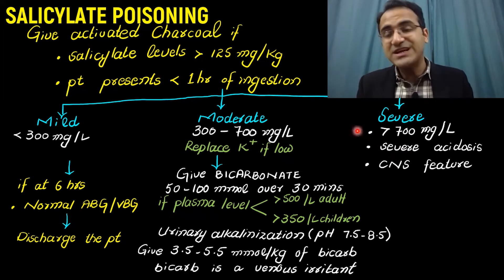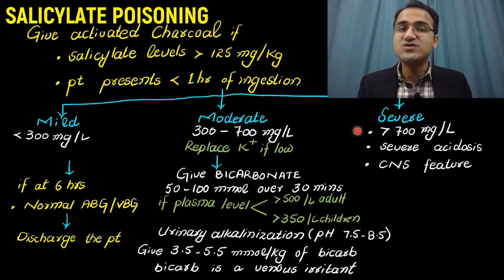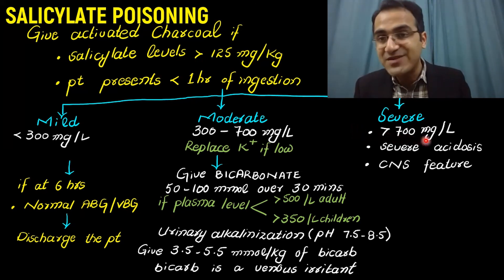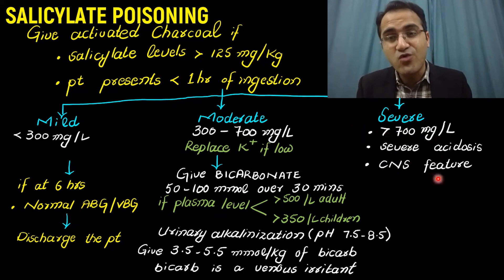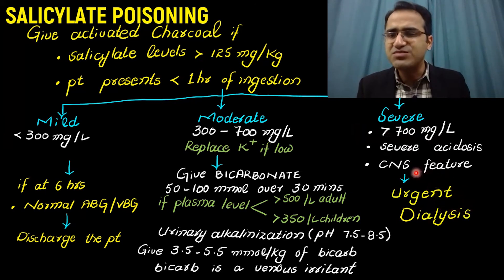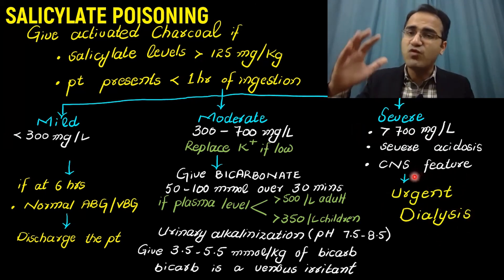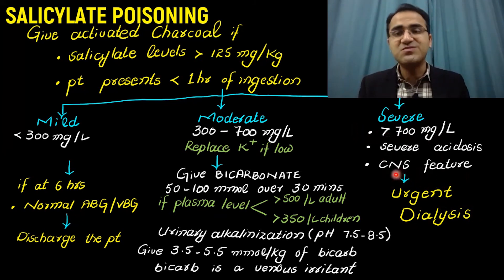In severe cases of salicylate poisoning — defined as salicylate level greater than 700 mg per litre, or severe acidosis, or CNS failure such as coma and confusion — urgent dialysis is needed to wash out salicylates from the blood. These patients may also need ventilatory support.